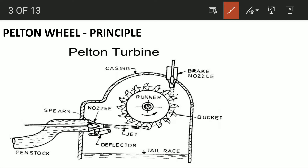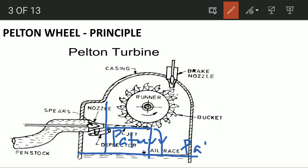This is the inlet portion. In the inlet portion, the pressure is atmospheric. This is the tail race portion — that is where the water strikes the buckets. In the tail race, the pressure is also atmospheric. The water transfers its kinetic energy to the runner.